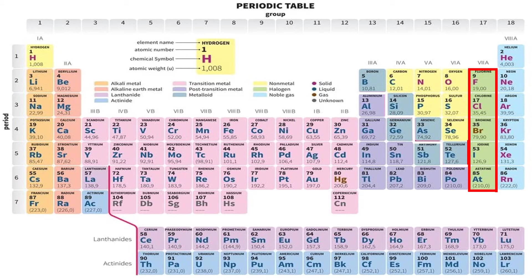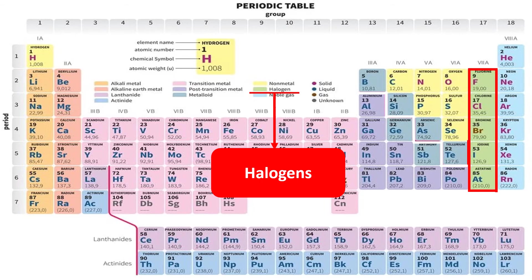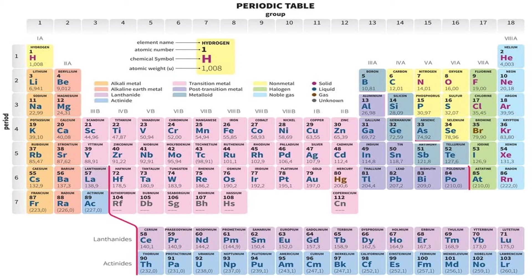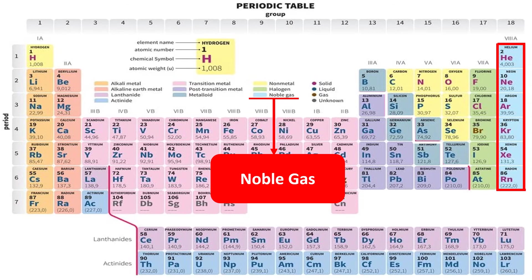These five elements are called halogens. And lastly, this group belonging to group 18 are called noble gases.